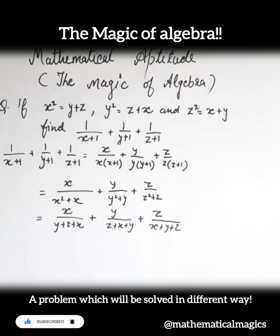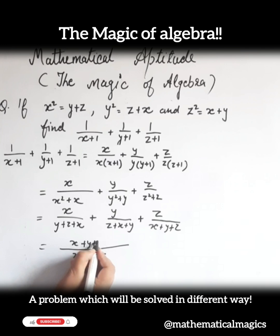Now, you can see, the denominator of each part is x plus y plus z. So, you can take common x plus y plus z. And numerator is also x plus y plus z.